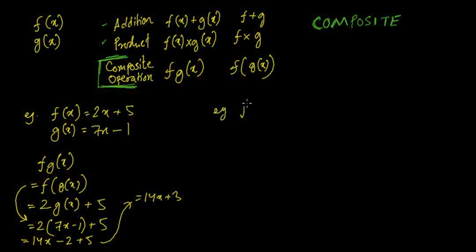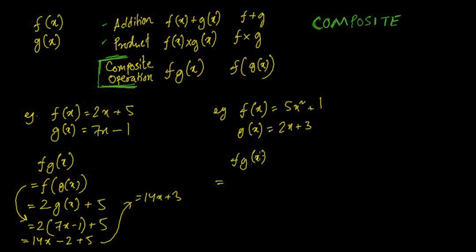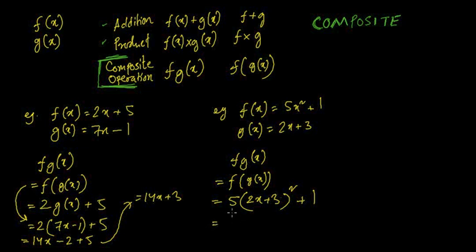Another composite function example: f(x) = 5x² + 1 and g(x) = 2x + 3. To find f(g(x)), put g(x) inside f(x): f(g(x)) = 5(g(x))² + 1 = 5(2x + 3)² + 1. We can simplify using (a+b)² = a² + 2ab + b², where a = 2x and b = 3.